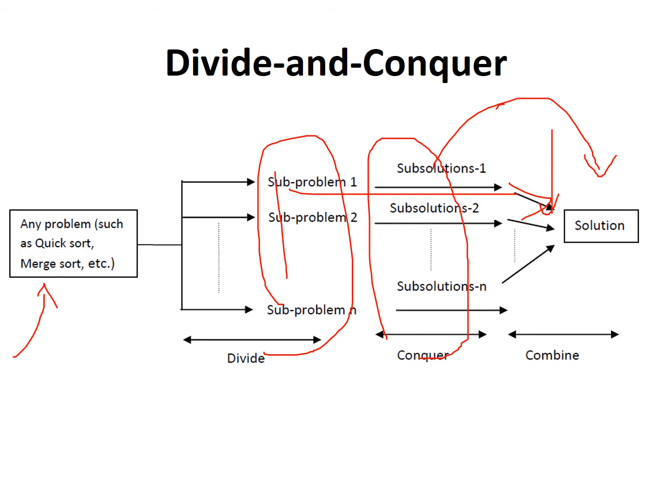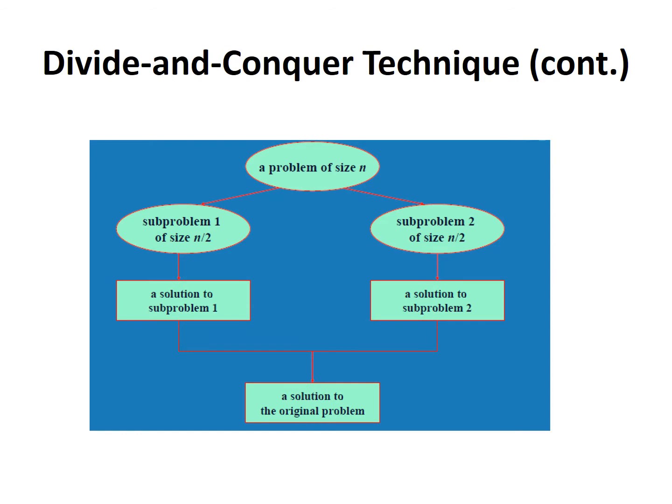You use recursive algorithms and a stack data structure to do this — making recursive calls and returning to the base call using a stack implementation. Now let's understand what a recurrence relation means and how you calculate time complexity for divide and conquer based approaches.